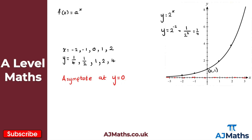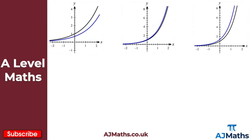What I'm going to look at now is the gradient function and a special type of exponential function. I've got three sketches of three different exponential functions: y = 2^x, y = 3^x, and y = 4^x. The larger the value of the constant a — whether it's 2, 3, or 4 — the quicker the growth is. I'm using the blue curve to represent the gradient function for each.